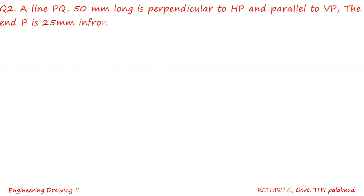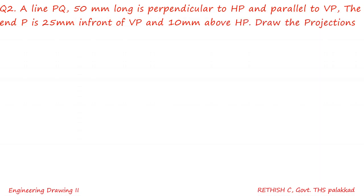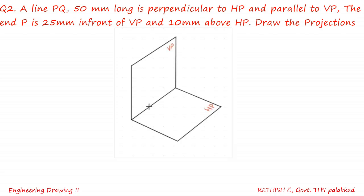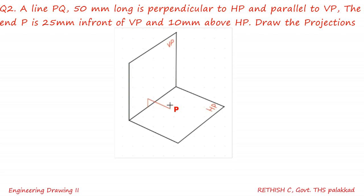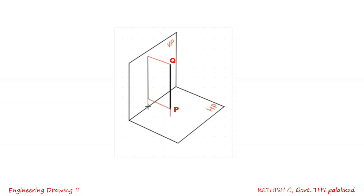The second example: a line PQ 50mm long is perpendicular to HP and parallel to VP. End P is 25mm in front of VP and 10mm above HP. Draw the projections. We can mark 10mm above HP and 25mm in front of VP. One end of the line P is there, and as the line is perpendicular to HP we draw the line accordingly, along with the projector line for the front view. In this example, the top view is a point.